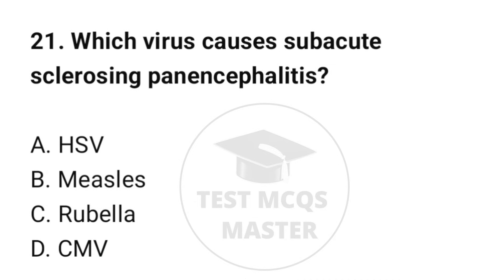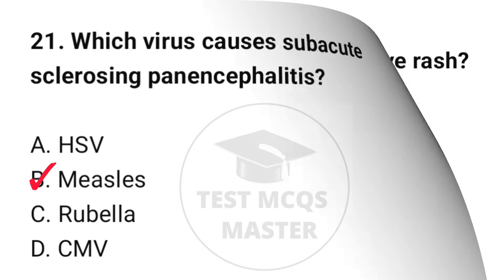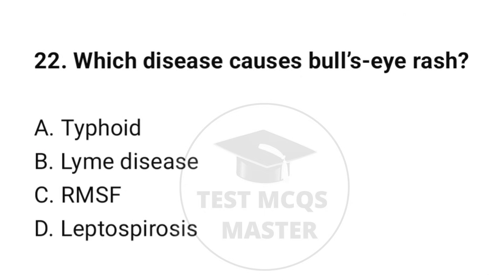Question number 21: Which virus causes subacute sclerosing panencephalitis? The correct option is B: Measles. Question number 22: Which disease causes bull's eye rash? The correct option is B: Lyme disease.